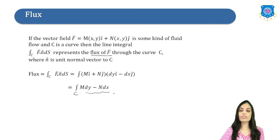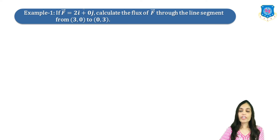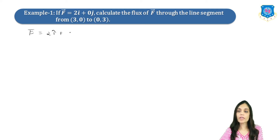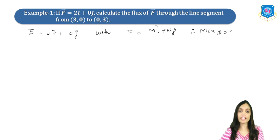Now let us understand this using one example. If F is equal to 2i cap plus 0j cap, we have to calculate the flux of F through the line segment from (3,0) to (0,3). Firstly, let us find the values of M and N by comparing F = 2i cap + 0j cap with F = Mi cap + Nj cap. So M(x,y) = 2 and N(x,y) = 0.